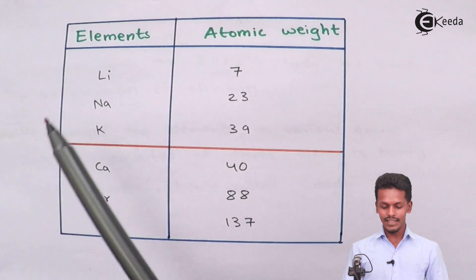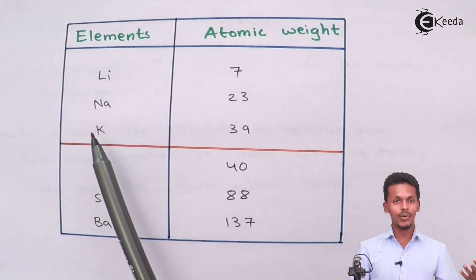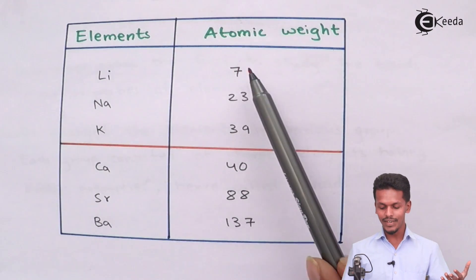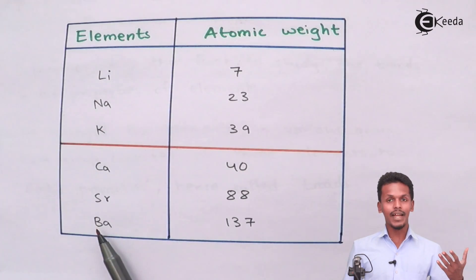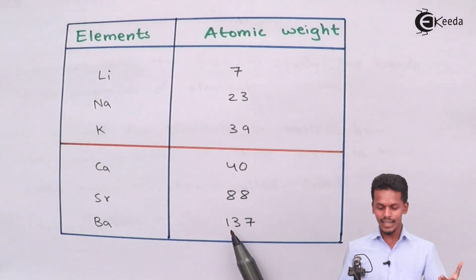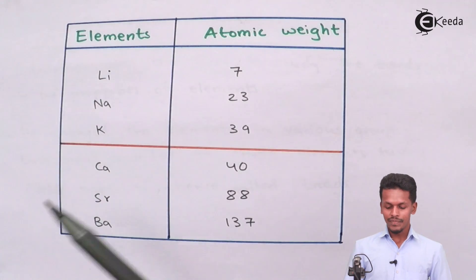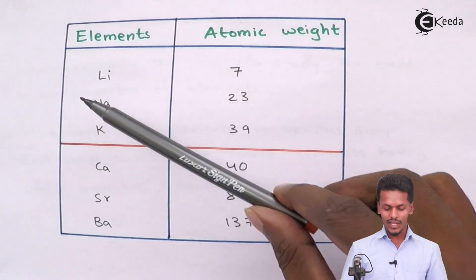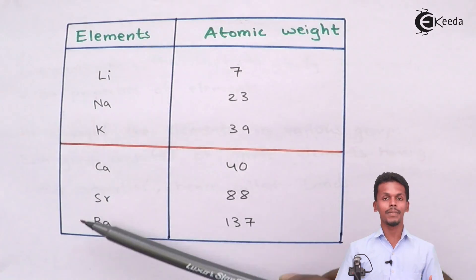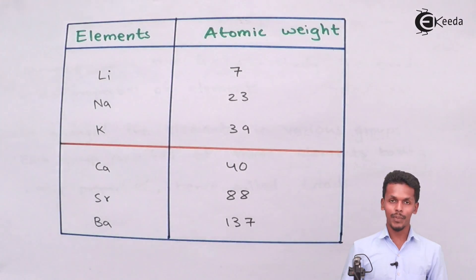As we could see these are the elements like lithium, sodium and potassium. They had an atomic weight of 7, 23 and 39 respectively. And that of calcium, strontium and barium had 40, 88 and 137. All these elements have similar chemical properties. Hence they were known as the triads.